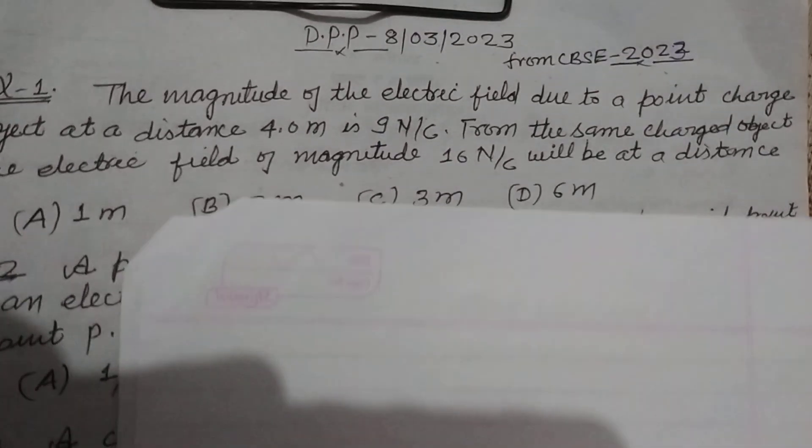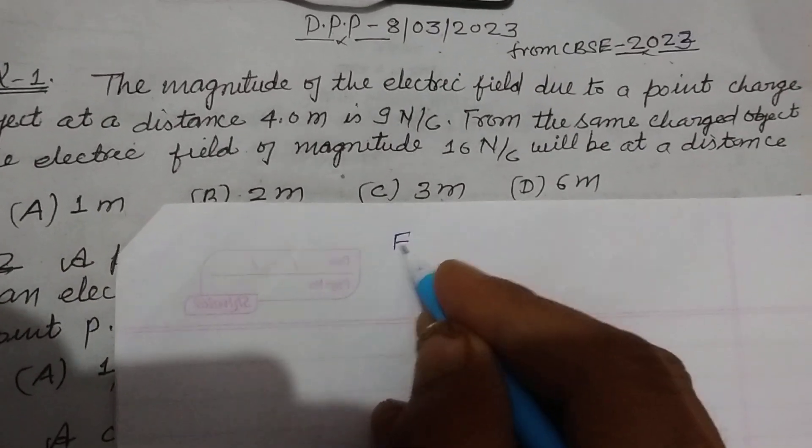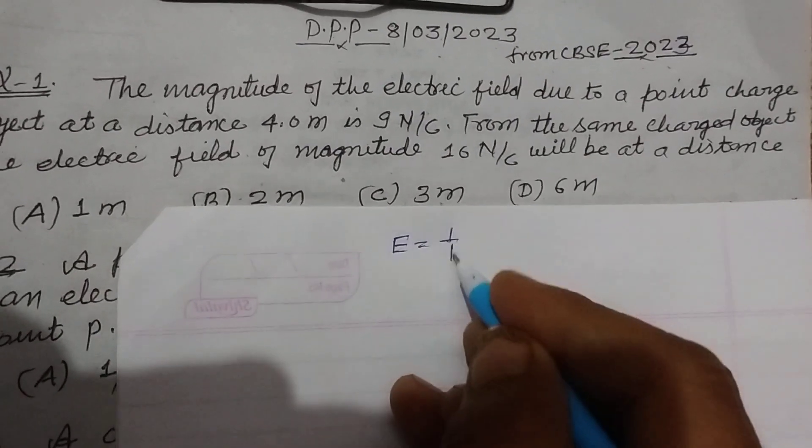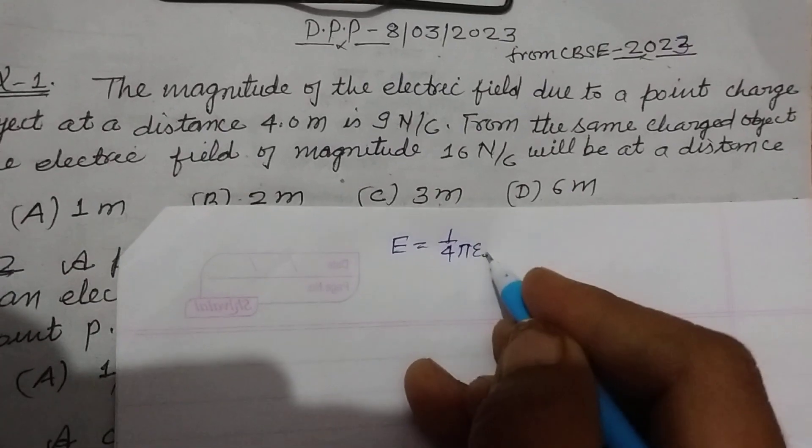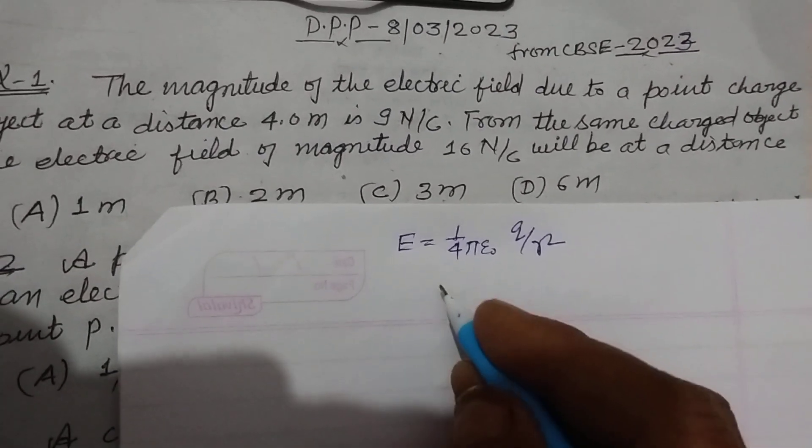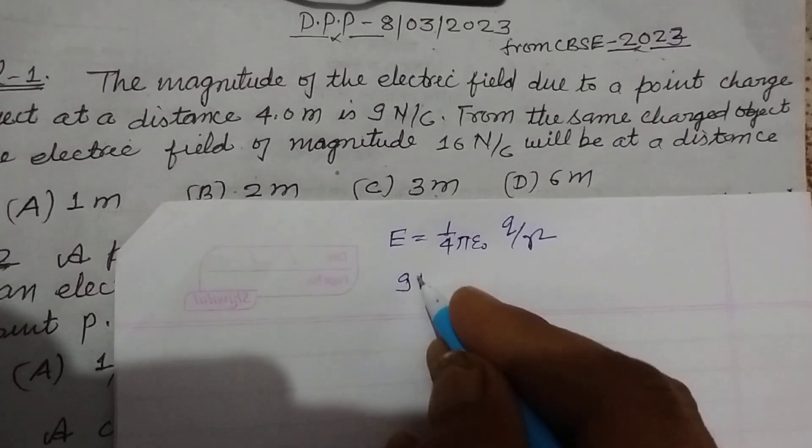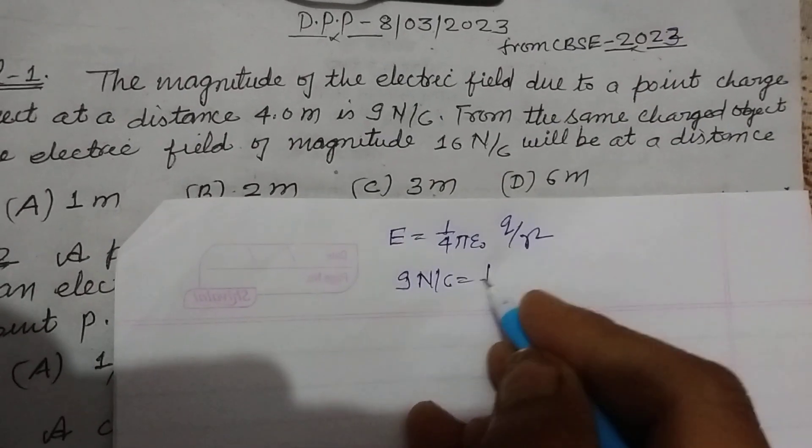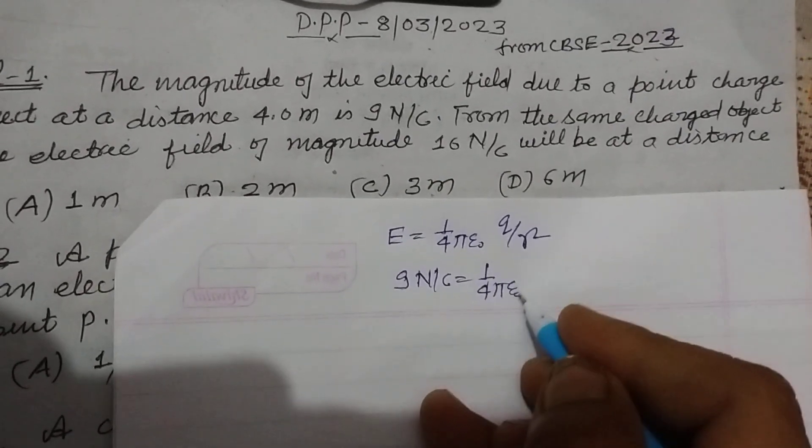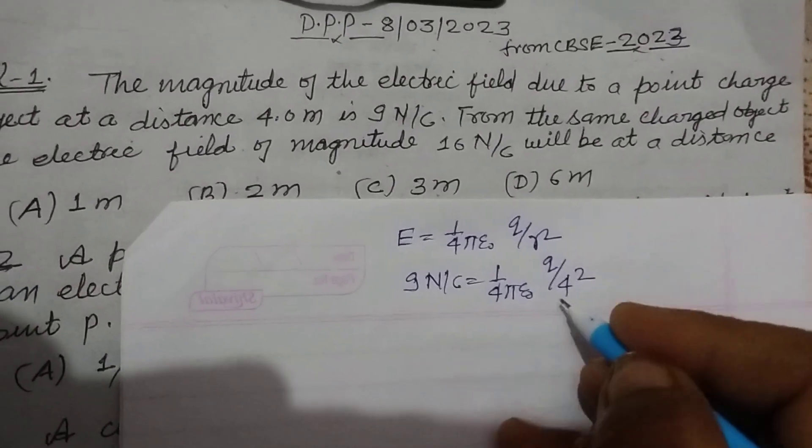So here we want to find out distance. Therefore, electric field E equals, you know that, 1 upon 4πε₀ q over r². So the electric field is given 9 Newton per coulomb. This is 1 upon 4πε₀ q and r is 4, so 4².